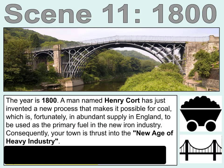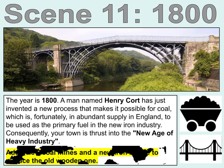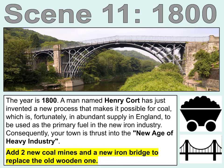Scene 11. The year is 1800. A man named Henry Court has just invented a new process that makes it possible for coal — which is fortunately in abundant supply in England — to be used as the primary fuel in the new iron industry. Consequently, your town is thrust into the new age of heavy industry. Add two coal mines and a new iron bridge to replace the old wooden one.